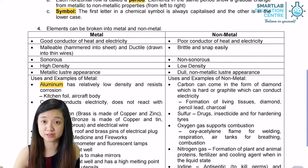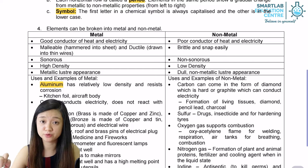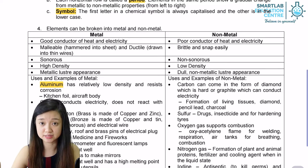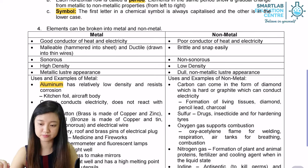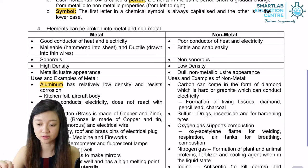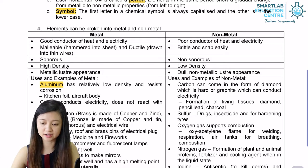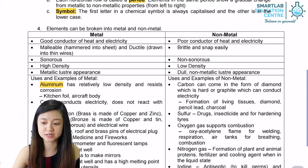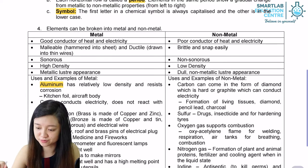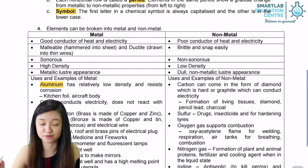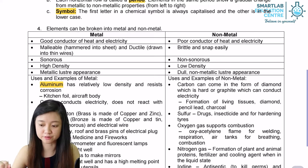Let's look at non-metals now. Non-metals are actually poor conductors of heat and electricity. They are brittle and snap easily. They are non-sonorous, meaning they do not produce a ringing sound when struck. They have a low density and are dull with a non-metallic appearance. Some examples include carbon, which can come in the form of diamond, which is hard, or graphite, which can conduct electricity — bearing in mind that graphite is the only non-metal that can conduct electricity.